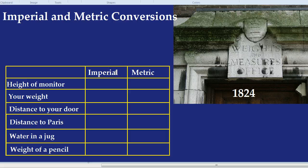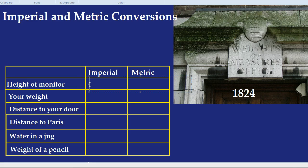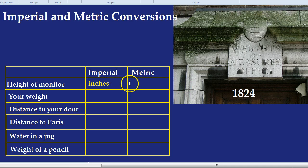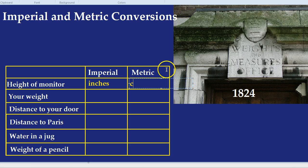With what measurement would we measure the height of your monitor, your computer monitor, if we're using the old-style imperial? We would actually measure that in inches. How about if we were measuring it in metric, with metric measurements? We'd talk about in terms of centimetres.